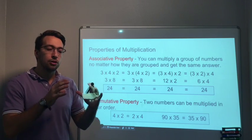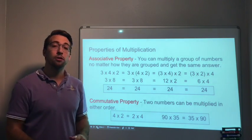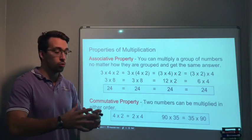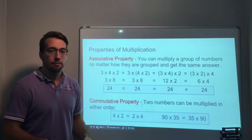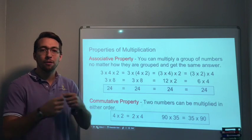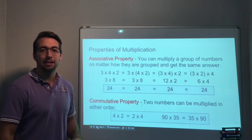The associative property means you're an associate of someone. You meet with them, you group with them. Doesn't matter what numbers you group together, it's the same. In the commutative property, you can flip the numbers and still multiply to get the same answer.